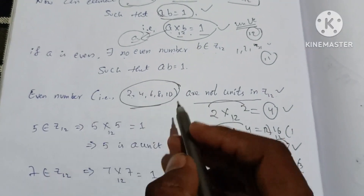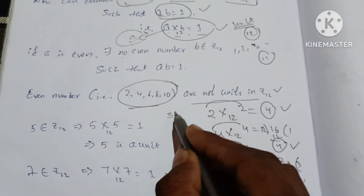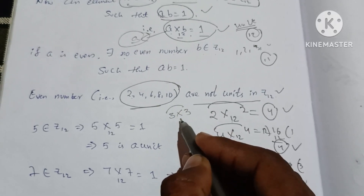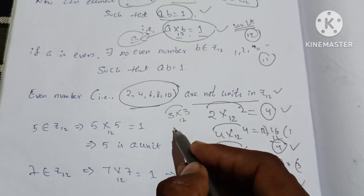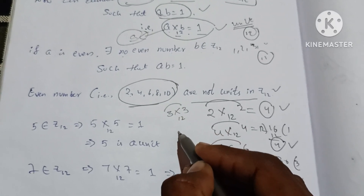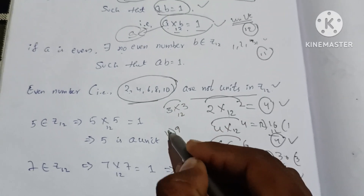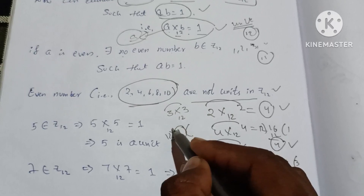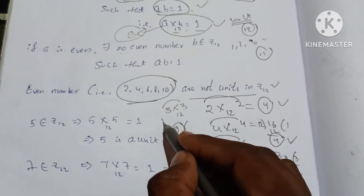Next, check 3. 3 into 3 is 9. 9 mod 12 is 9, which is not 1. So 3 is not a unit.